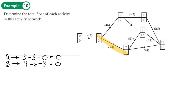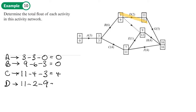Activity C: 11 minus 4 minus 3, which is 11 minus 7, leaving a float of 4. Activity D: 11 minus 2 minus 9, which equals 0. Any activity that has a float of 0 is a critical activity, because any delay will delay the finish time of the whole project.